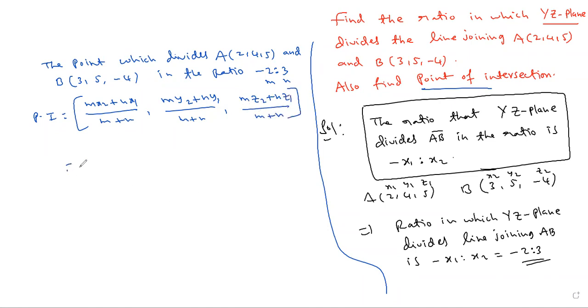Now which is equal to Mx2 plus Nx1. Substituting M is minus 2, X2 is 3, plus N is 3, X1 is 2, by M plus N, minus 2 plus 3.